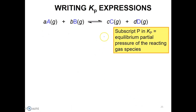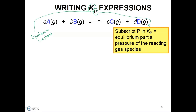Next, writing the Kp expression. Here, K represents the equilibrium constant, and the subscript P represents partial pressures. Only species in the gas phase are involved in the Kp expression.